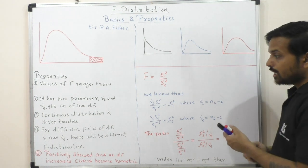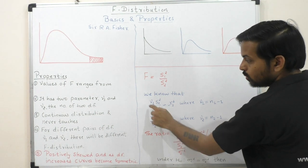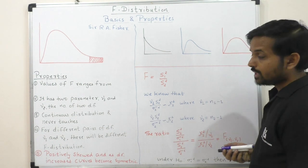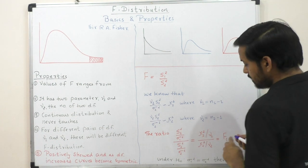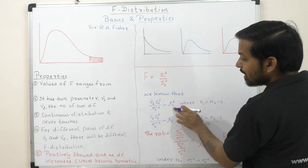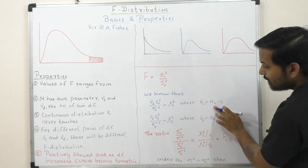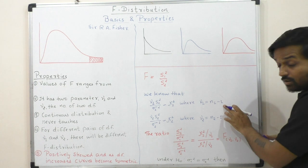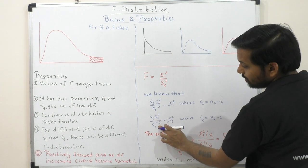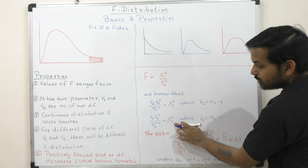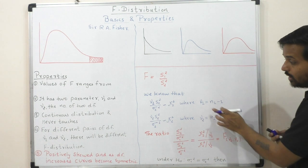The degrees of freedom are ν1 and ν2. So ν1 and ν2 are two degrees of freedom. ν1 equals s1 squared divided by sigma 1 squared — this follows the chi-square distribution, where ν1 equals n1 minus 1. And ν2 equals s2 squared divided by sigma 2 squared, which also follows the chi-square distribution, where ν2 equals n2 minus 1.